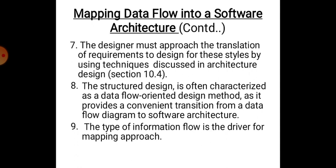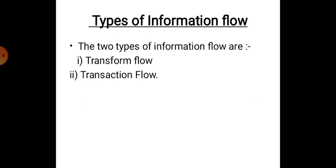The type of information flow is the driver for mapping approaches — how the information flows decides the mapping approach. There are two types of information flow: transform flow and transaction flow. We will study more about this in the next session. Please write this in your notebook. Thank you.